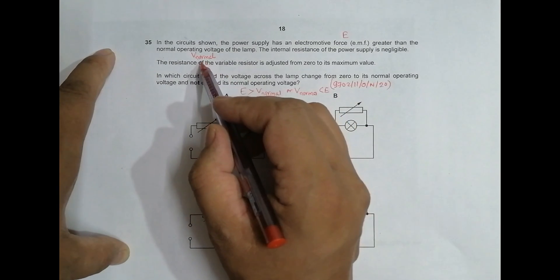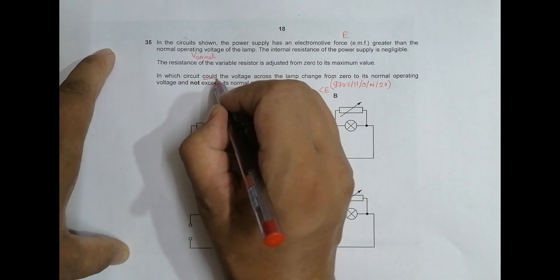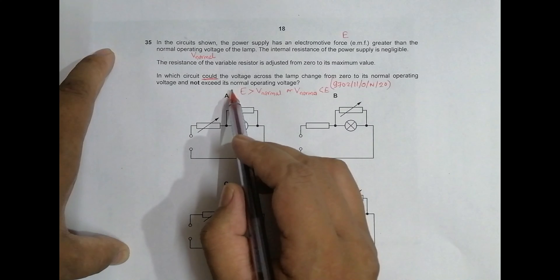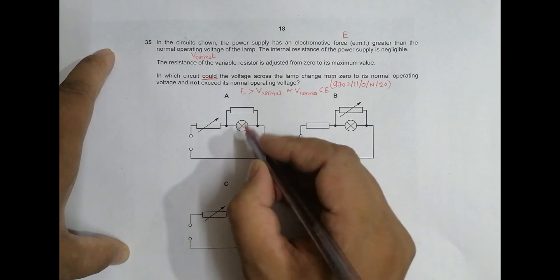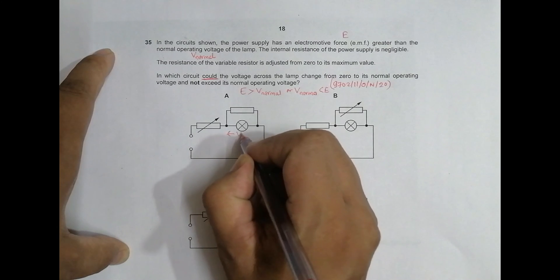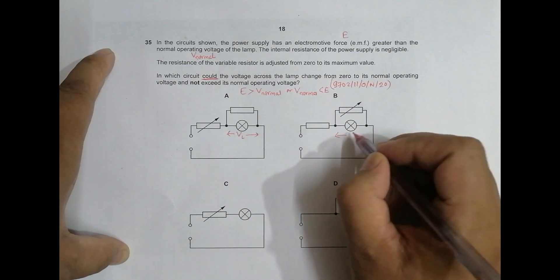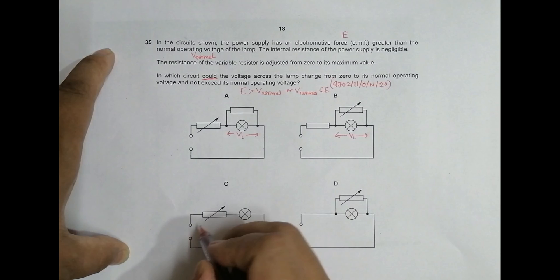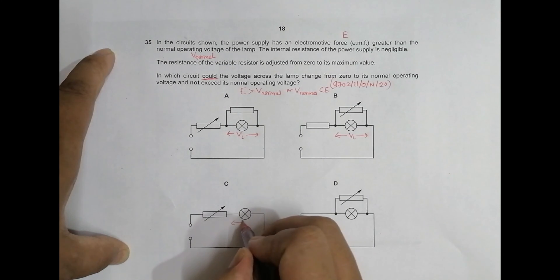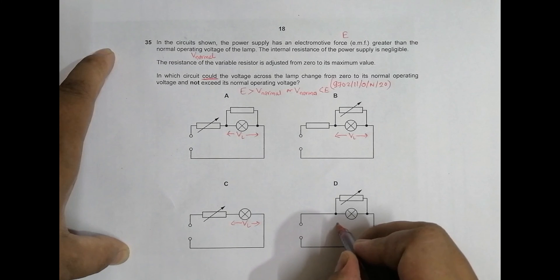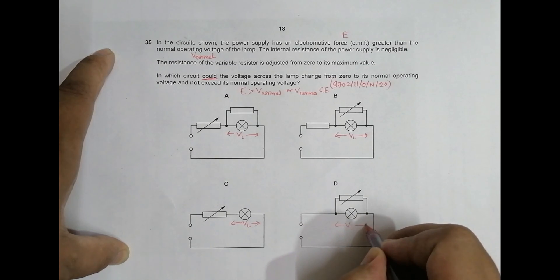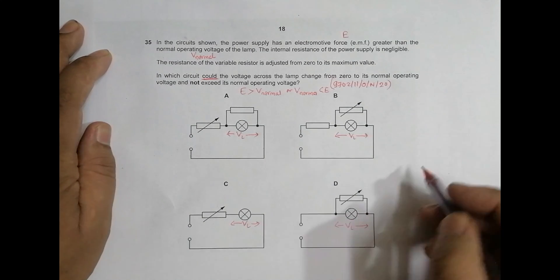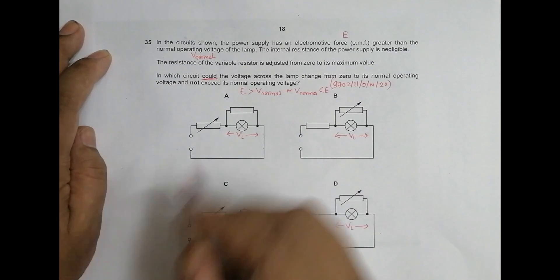The word 'could' is important — it means there is a chance that the voltage changes from zero to V_normal and does not exceed it. So the voltage across the lamp, V_L, should not exceed V_normal. Let us explore the circuits one by one. Almost all these circuits behave like voltage divider circuits.